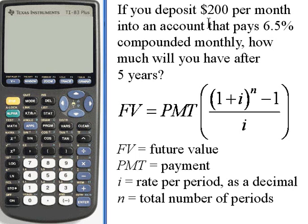Here's what the problem means. Let's say that every month you put $200 into an account. The account gets interest, which is compounded monthly. The interest rate is 6.5% per year. You do this for 5 years.